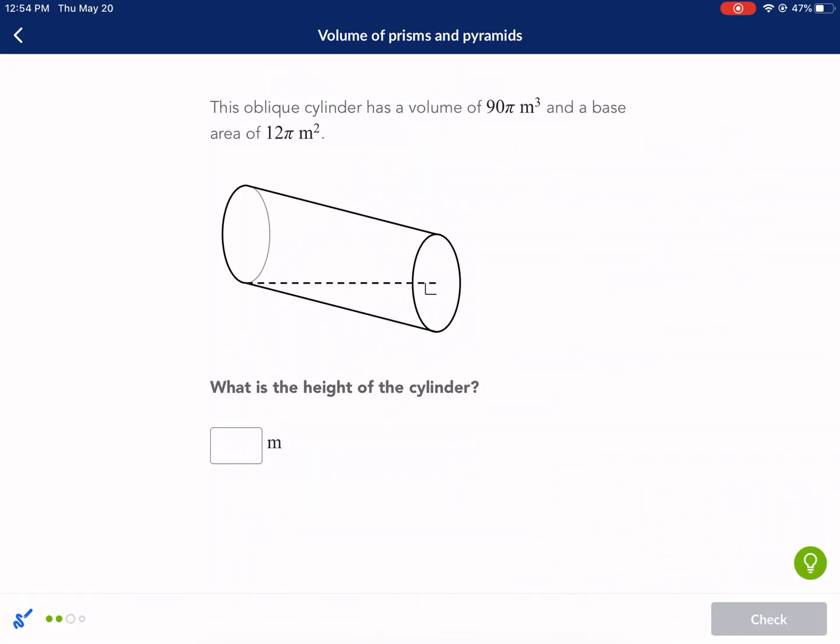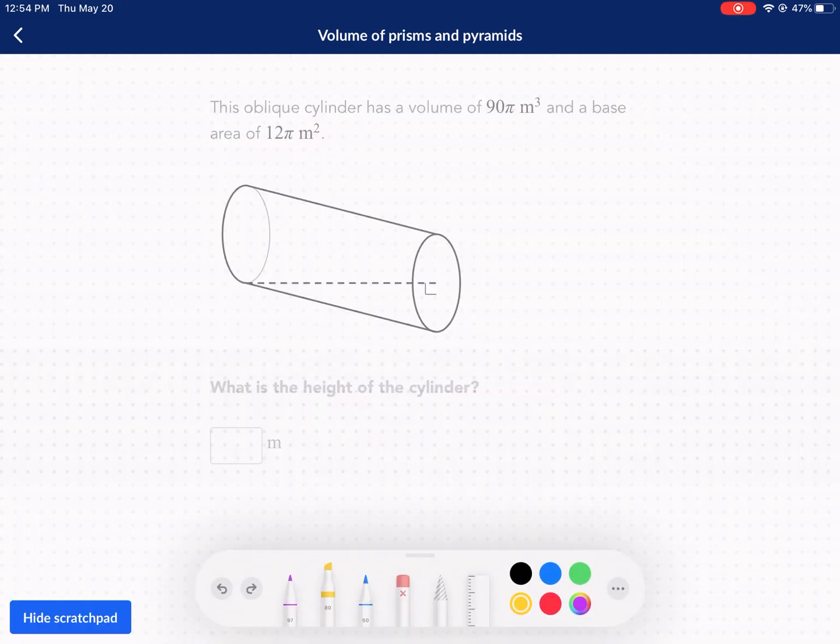This oblique cylinder has a volume of 90 meters cubed and a base of 12 meters squared. What is the height of the cylinder? We're going to reverse now. So we already know that volume equals pi r squared h. We're trying to find h. That's our goal. We're looking for h because we're already given the volume. The volume is 90 pi, and we already know the radius. No, the base area is 12. So my base area, area of my base is 12 pi m squared.